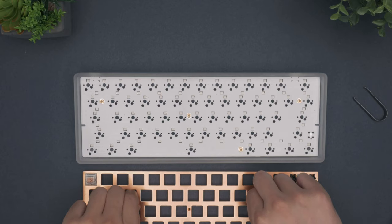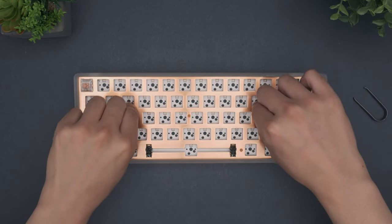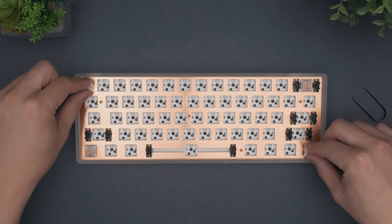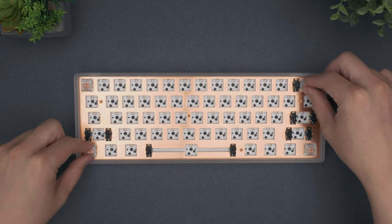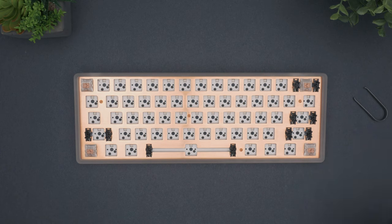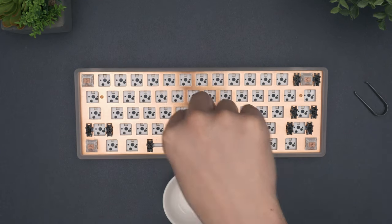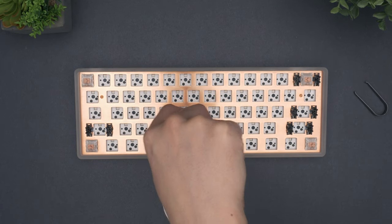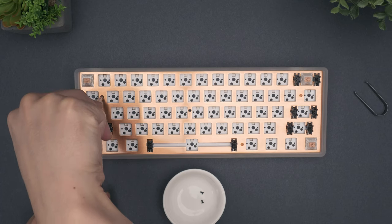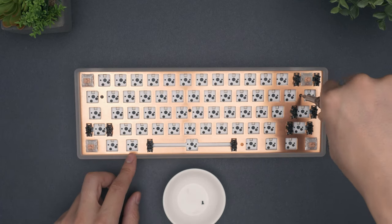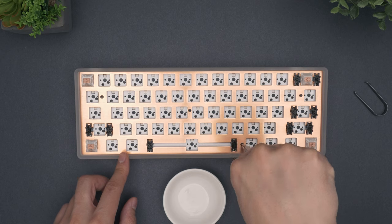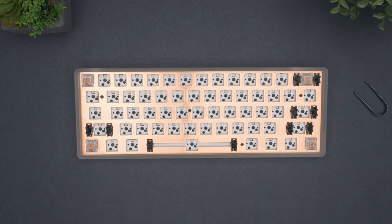Next, place the top plate over the PCBA and wiggle it around until it feels firm, which means the pins are nested into the hot swap sockets. Press down on opposing corners to seat the switches. If that's good, take your screws and secure the plate through these four holes. Start from the middle screw and work outwards so the pressure is evenly distributed. Once everything is tight, let's add your switches.